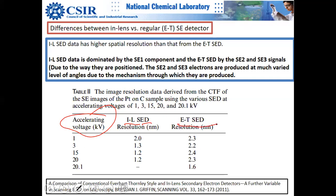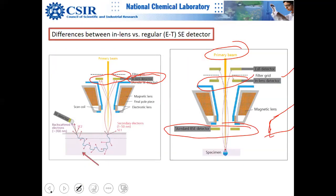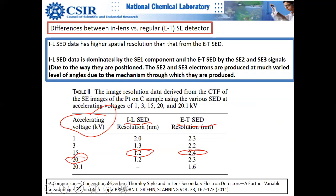With an in-lens secondary electron detector, for example at 20 kV, the resolution is almost twice as good as with the Everett-Thorne detector. SE2 and SE3 electrons coming from larger areas reduce resolution. In-lens design excludes these unwanted signals — SE2 and SE3 worsen the resolution in the ET detector.